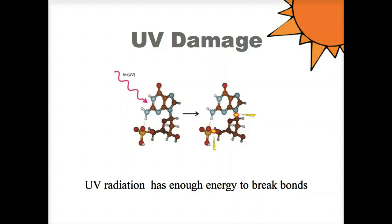Photons in the ultraviolet region possess enough energy to displace electrons within neutral molecules, converting them into positively charged particles or free radicals.